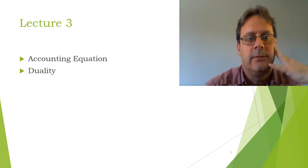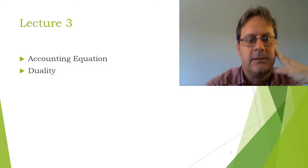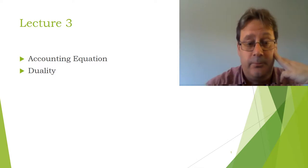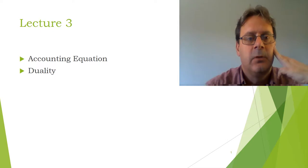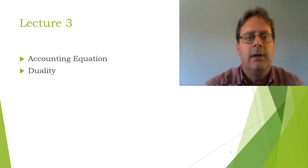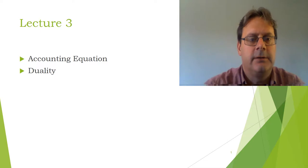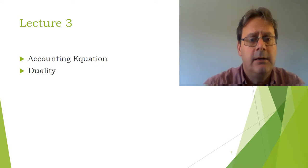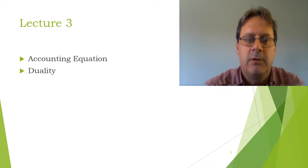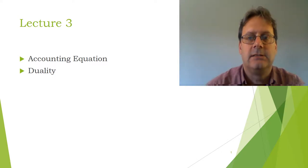In lecture number two, we looked at the accruals concept and we saw when we actually include income and expenses — that's a big topic for specific types of transactions, but it was a nice little introduction, and you saw there that we had Sally on the metro. Coming on to lecture number three, we're going to be looking at the accounting equation. It's something very easy, but it comes with this concept of duality — the idea that things work together.